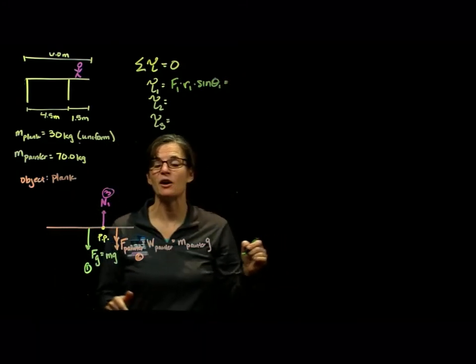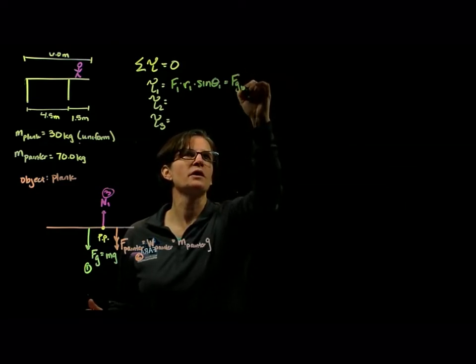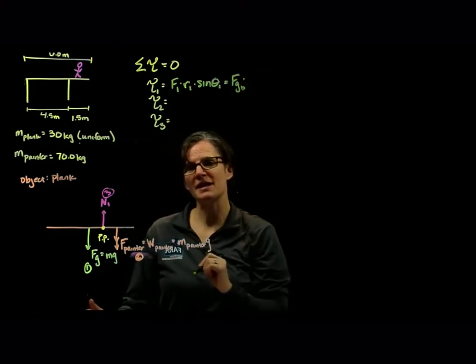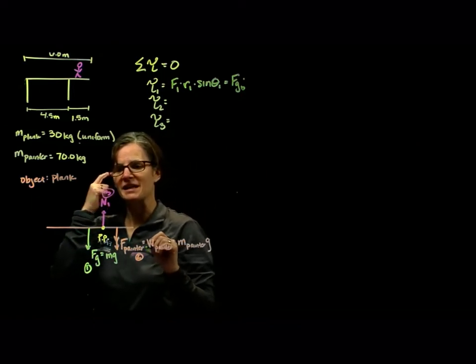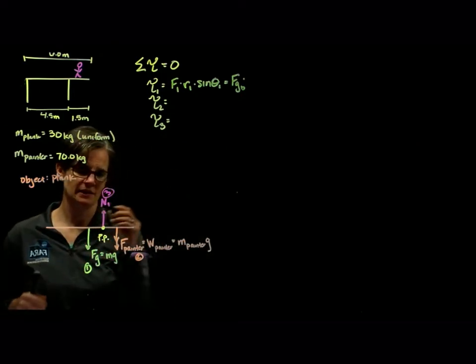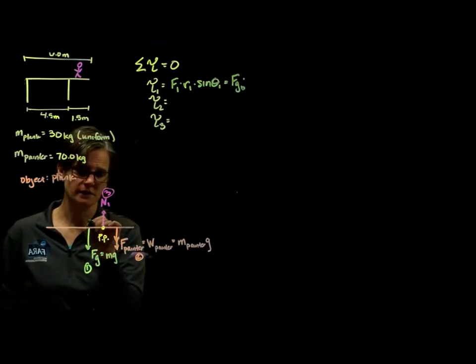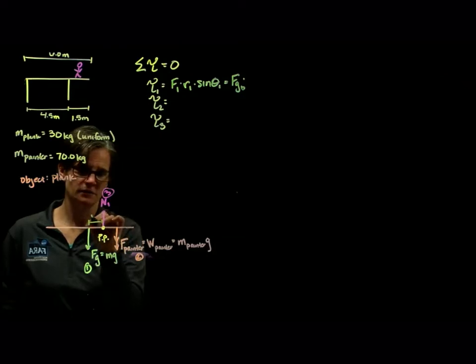My force one is the force of gravity on that board. So force of gravity of the board times the radius. We need to figure out the radius. That's the radius from the pivot point to the force. So this is radius one.